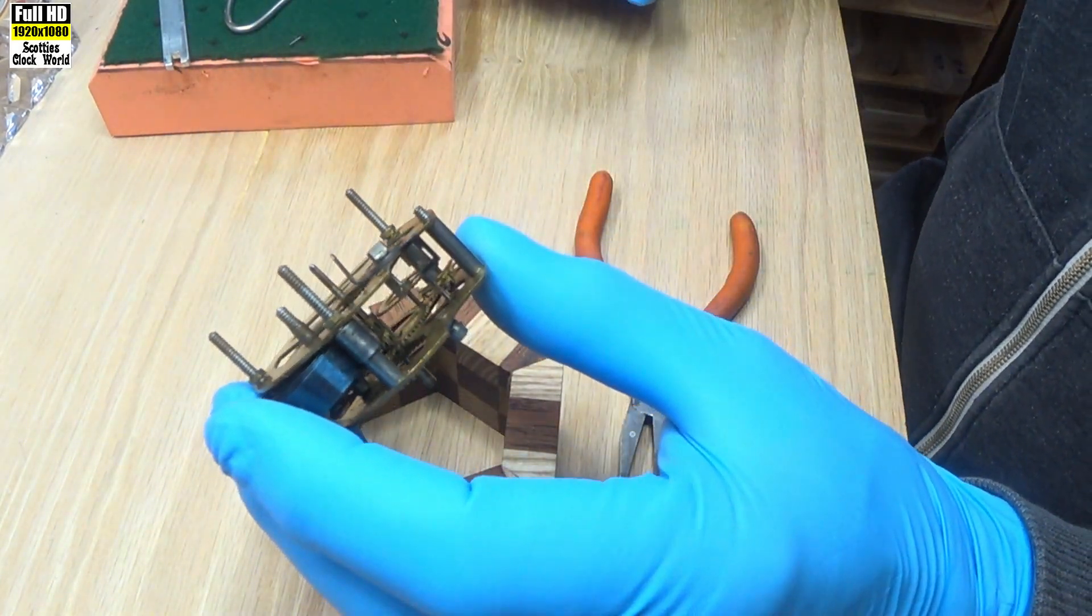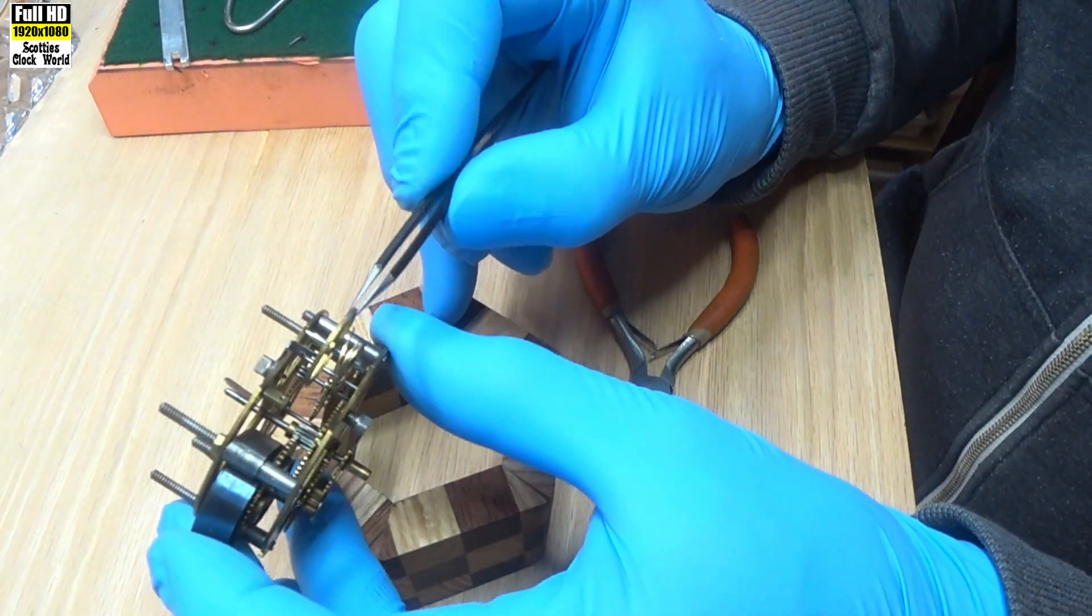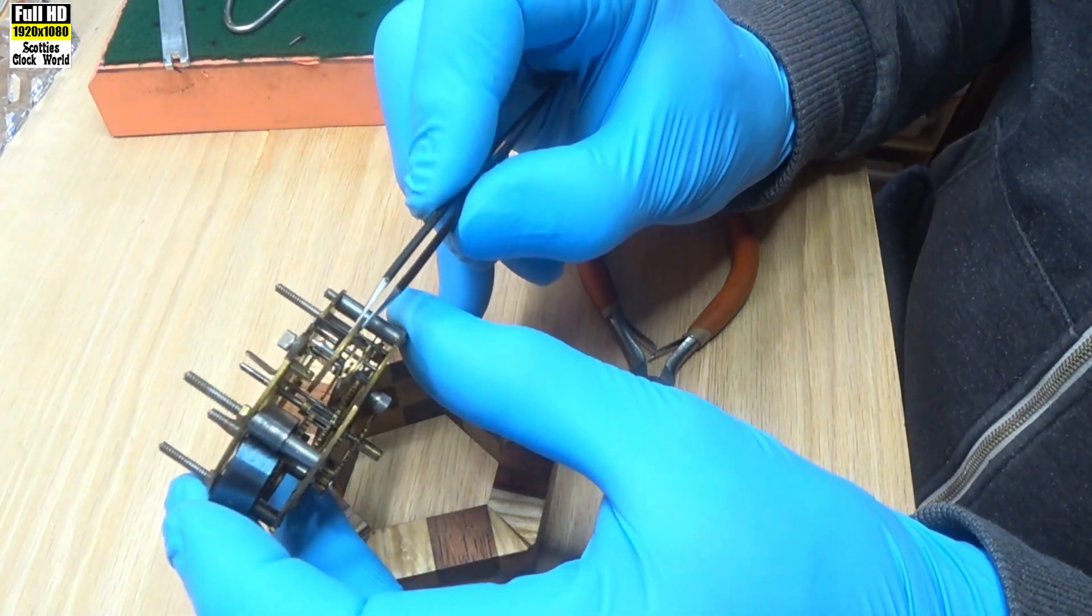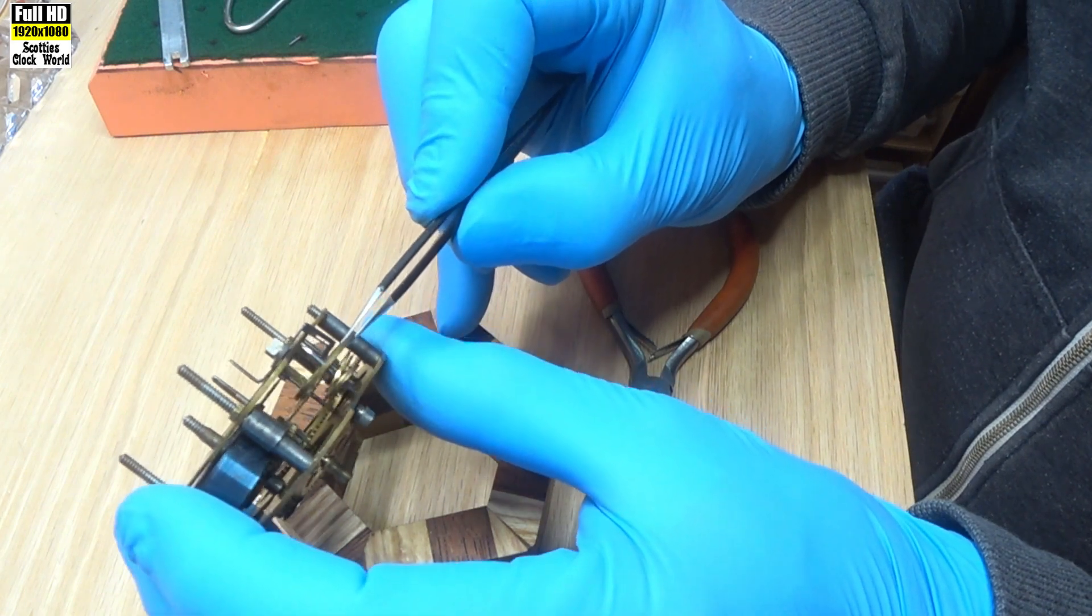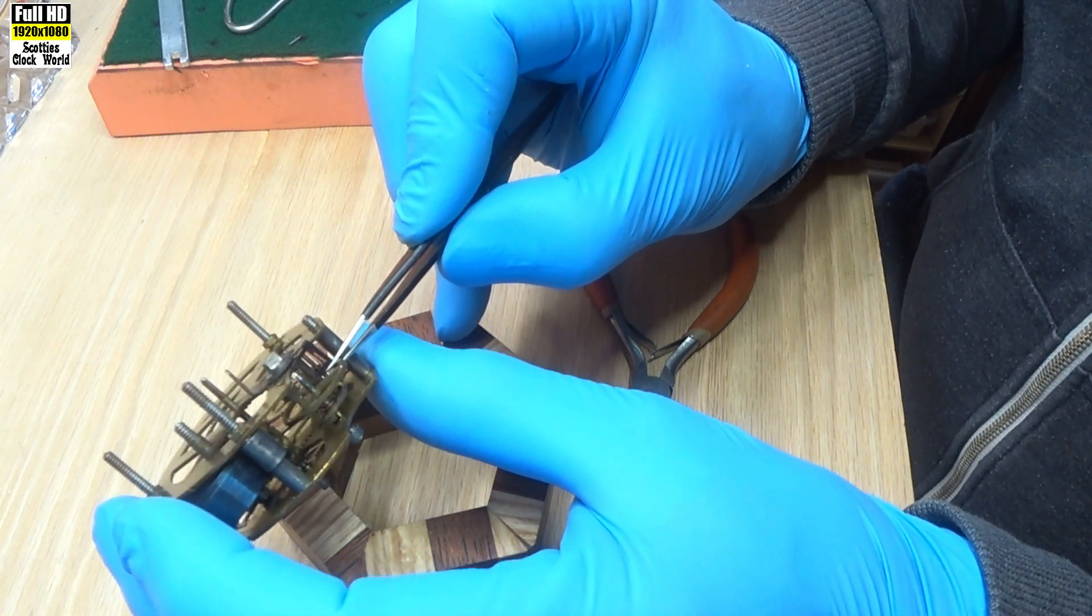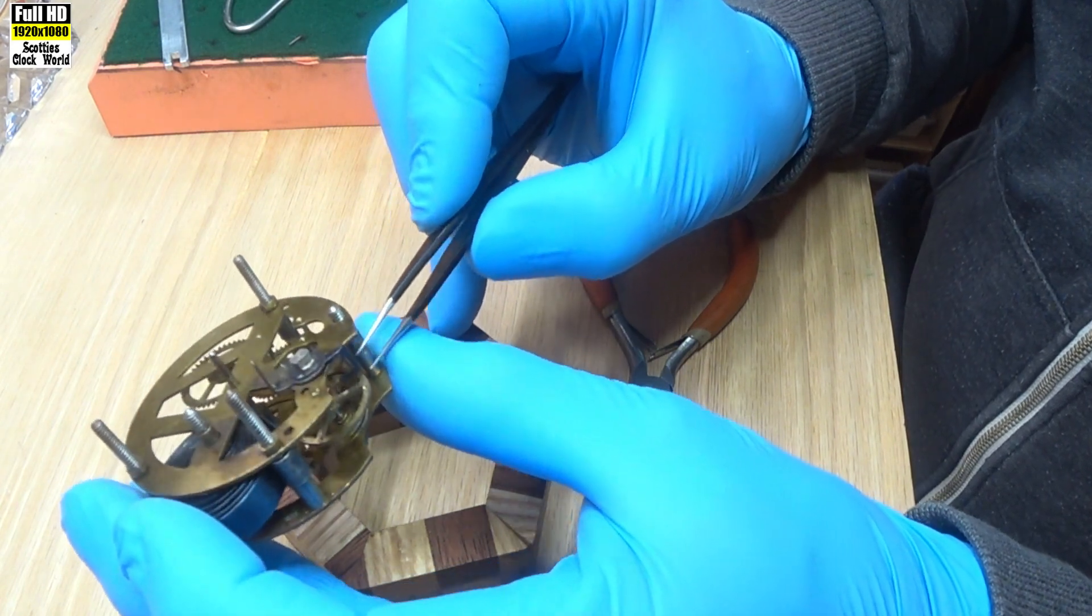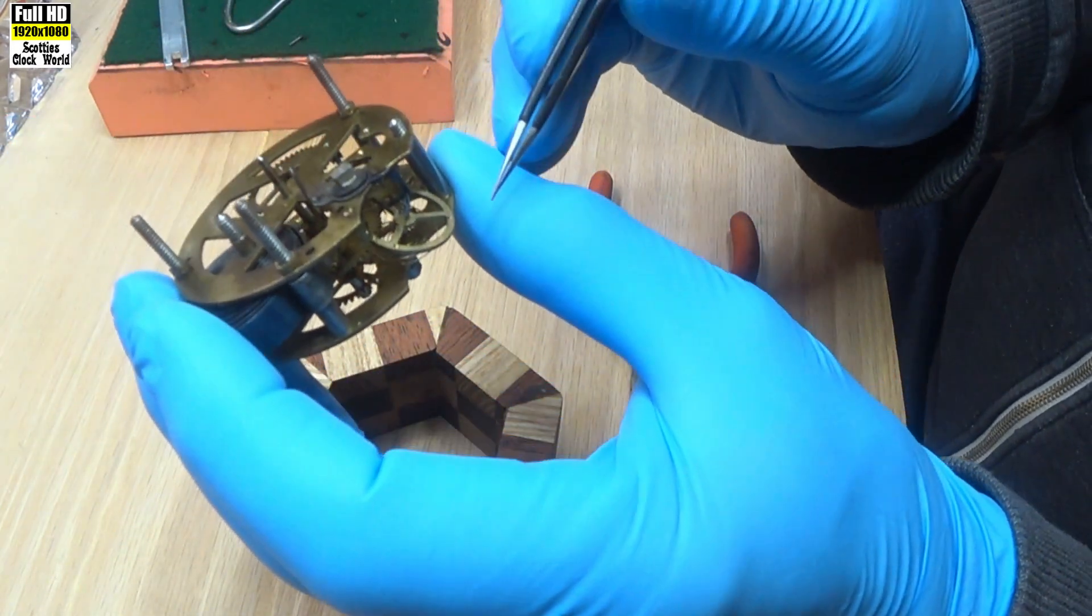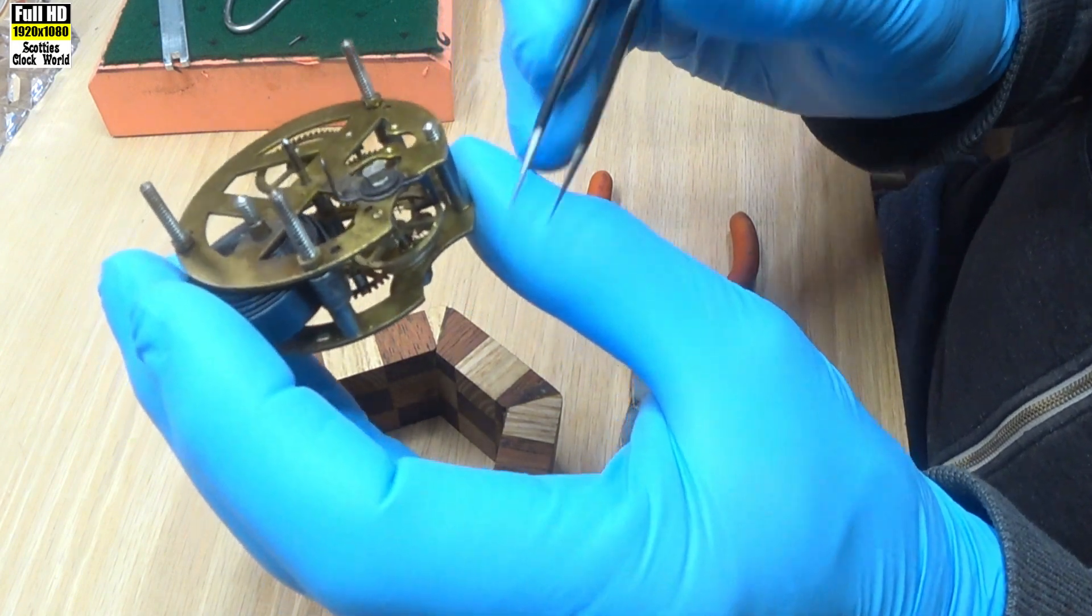Then very carefully pick up the balance wheel and fit it in to the bottom pivot, and it just sits there.